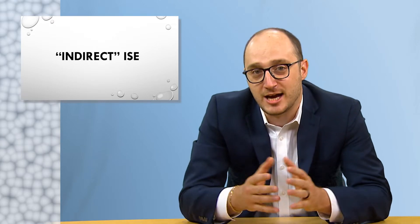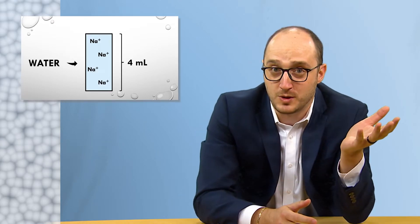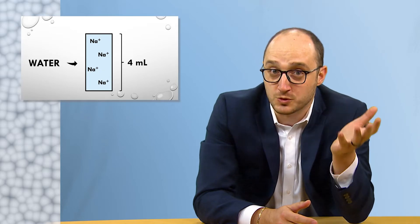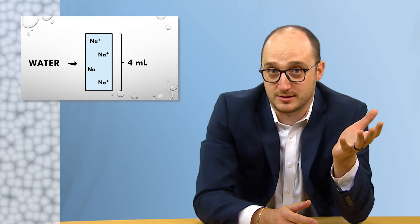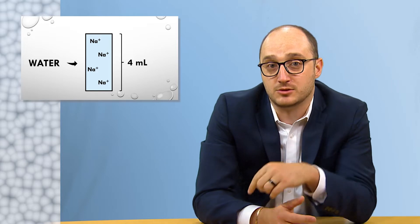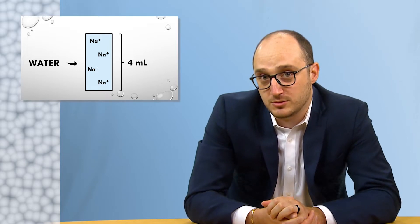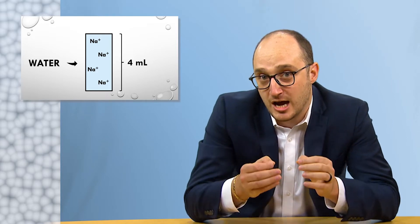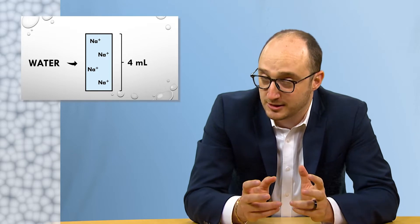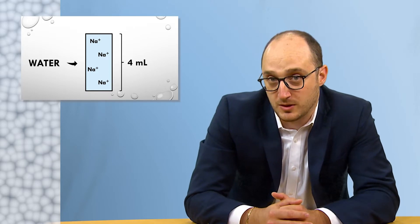Here's how. Imagine you have a 4 ml water sample that has 4 sodium ions in it. If I drop an electrode in that solution, the electrode, which measures ion activity in water, will read — hypothetically — 1 ion per ml.